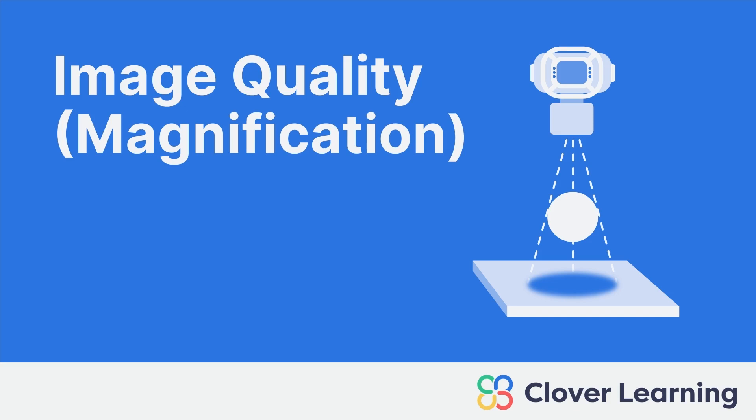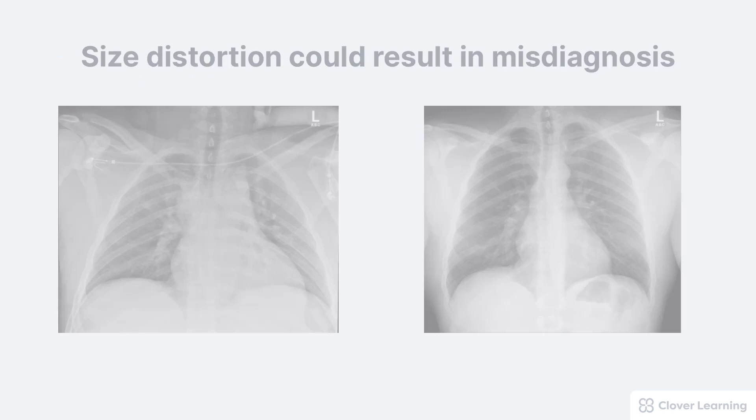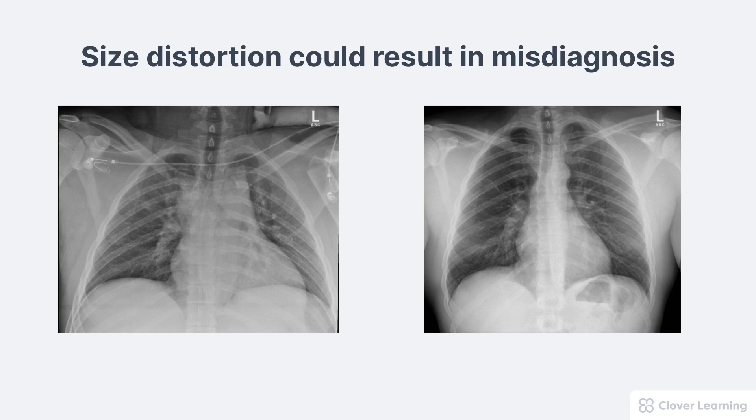Magnification distortion within x-ray imaging describes the phenomenon of the size difference between the actual anatomy and the size of its representation on a radiograph. Size distortion is important to understand as it makes anatomy seem much larger than it actually is and can lead to missed diagnosis.